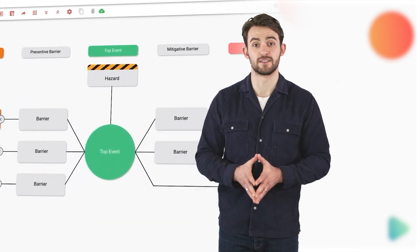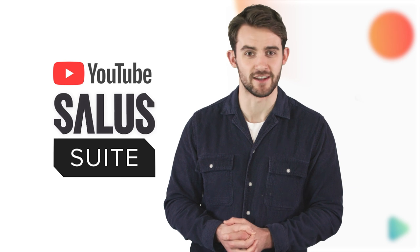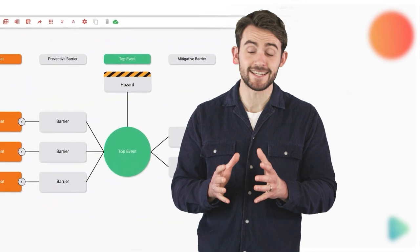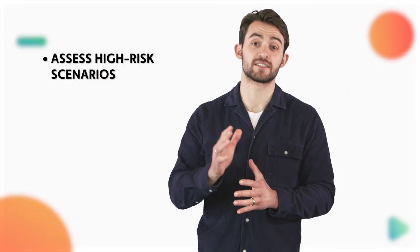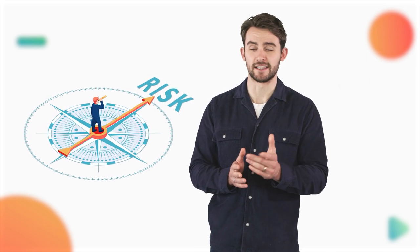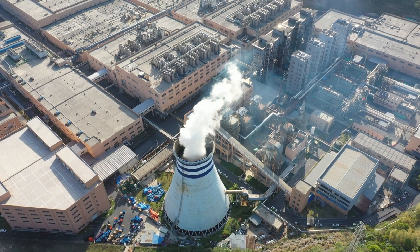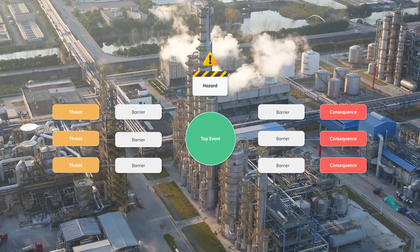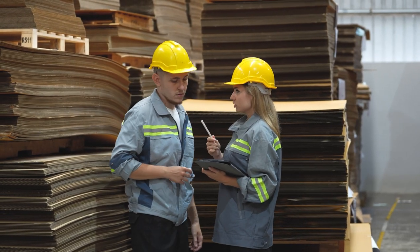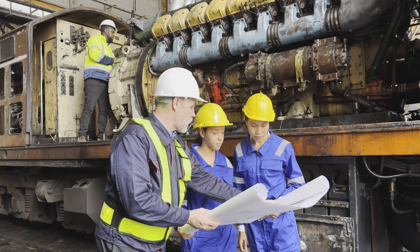Bowtie Master is an incredibly user-friendly bowtie diagram software, and we've got plenty of helpful videos on our channel to get you started. But let's get back to our quick guide and move on to our fourth and final chapter — Number four: when to use them. You should consider using bowtie diagrams when you want to assess high-risk scenarios or understand the impact of potential incidents. They're like your risk compass, guiding you when things get tricky. For instance, if you're dealing with hazardous chemicals, a bowtie diagram can help you visualize the potential risks and the safeguards in place to prevent accidents. It's not just a drawing — it's your roadmap to safety. You should also consider using bowtie diagrams when you need to communicate risks and hazards to a large group of people, such as training personnel on a new job site. Anyone who's been a risk manager will know how hard this can be, so having an easy-to-understand visual can be super helpful.